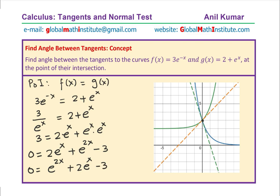This looks like a quadratic equation, so we can factor it. We are looking for a product of −3 and sum of 2, which is 3 times −1. So we factor as (e^x + 3)(e^x − 1) = 0. These are the two factors. Either e^x = −3, but e^x cannot be negative, so the only valid solution is e^x = 1.